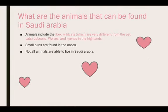Last but not least, what are the animals that can be found in Saudi Arabia? Animals include the ibex, wild cats — which are very different from the bad cats — baboons, wolves, and hyenas in the highlands. Small birds are often found in the oceans. Not all animals are able to live in Saudi Arabia because God Almighty has created those animals with adaptations, so they will survive this harsh weather.